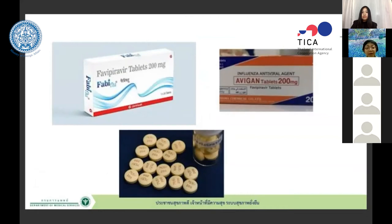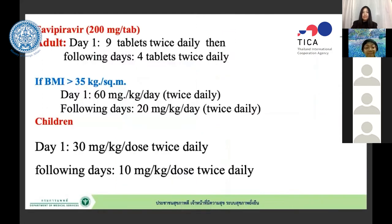Favipiravir tablets are 200 mg. The dosing is nine tablets twice daily on the first day, followed by five days for non-severe cases; this can be extended to 10 days for severe cases. BMI adjustment is important — for patients over 90 kg, we increase the dose. We also need to adjust for patients with liver problems and monitor accordingly.